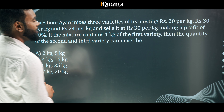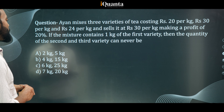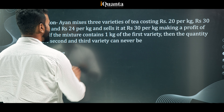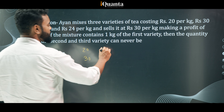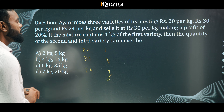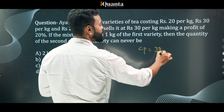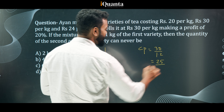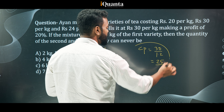Next question: A man mixes three varieties of tea costing rupees 20, 30, and 24 per kg, and sells the mixture at rupees 30 per kg making a profit of 20%. The mixture contains 1 kg of the first variety; find the quantity of the second and third variety that can never occur. Since selling price is 30 with 20% profit, the cost price is 30/1.2 = 25. So the average cost price of the mixture is 25.